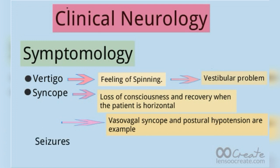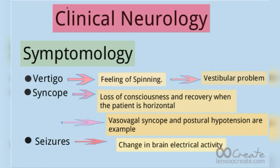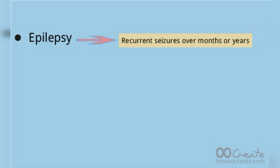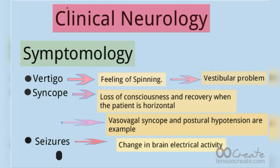The third symptom of the nervous system is a seizure, which is defined as a change in the brain's electrical activity. Epilepsy is defined as recurrent seizures over months or years — for example, one attack of seizure, then another attack, and then another a few months later. This type of recurrent seizure attack is termed epilepsy.